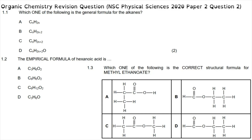Question 1.1 asks which one of the following is the general formula for alkanes. Alkanes always have the general formula CₙH₂ₙ₊₂, where alkenes have the general formula CₙH₂ₙ, and alkynes have the general formula CₙH₂ₙ₋₂.